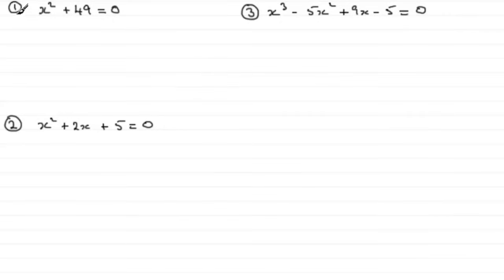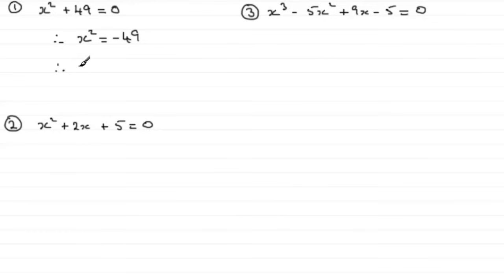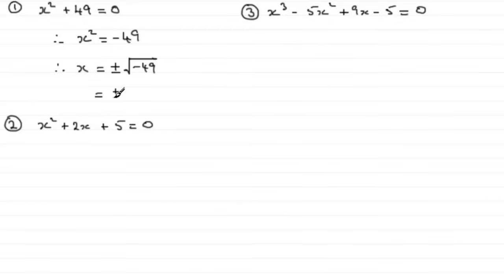Welcome back if you had a go — let's see how you got on. The first one, x squared plus 49 equals 0, should be fairly straightforward. Subtract 49 from both sides: x squared equals minus 49. Taking the square root — and don't forget it will be plus or minus — we get the square root of minus 49, which we can think of as root 49 multiplied by the root of minus 1, in other words plus or minus 7i.